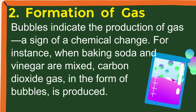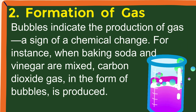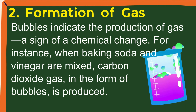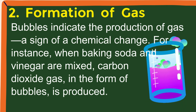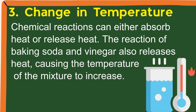2. Formation of gas — bubbles indicate the production of gas, a sign of a chemical change. For instance, when baking soda and vinegar are mixed, carbon dioxide gas in the form of bubbles is produced. 3. Change in temperature — chemical reactions can either absorb heat or release heat. The reaction of baking soda and vinegar also releases heat, causing the temperature of the mixture to increase.